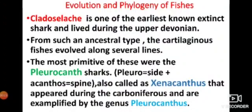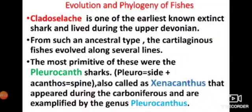Before starting the next topic, I would like to tell you about the acanthodians, who were the earliest known placoderms and they resemble superficially the sharks. They are regarded as descendants of placoderms ancestors. The cartilaginous fishes, which include sharks, rays, and chimera, appeared in the middle Devonian period.